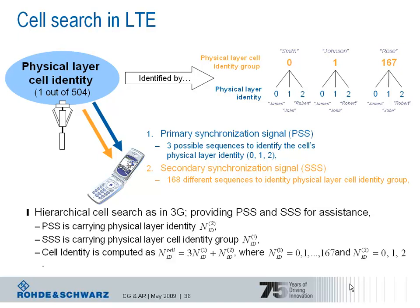The secondary synchronization signal contains the physical layer cell identity group, which is according to our jingle the surname. Compared to real life, where you use your first name first when you introduce yourself, the terminal also looks first for the primary synchronization signal, then for the secondary one. The cell's identity is computed based on a modulo-3 operation: multiplying the group identity by 3 and adding the physical layer identity.